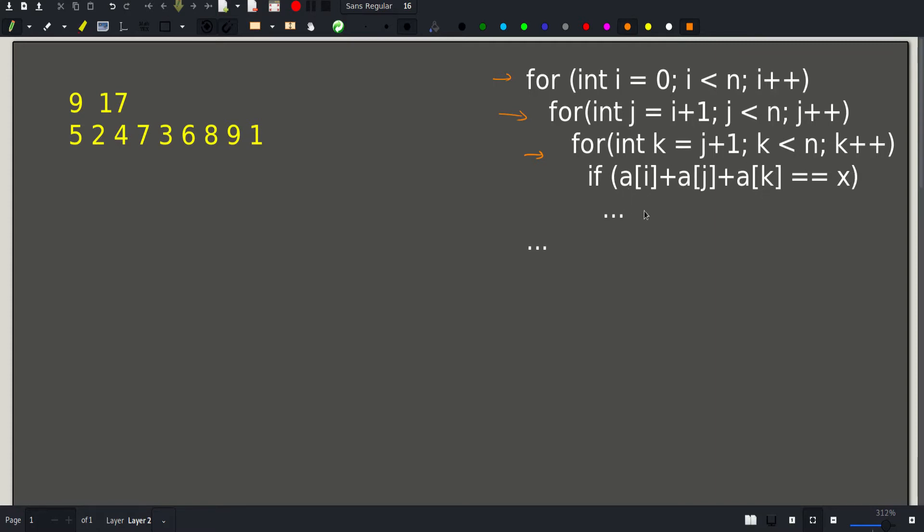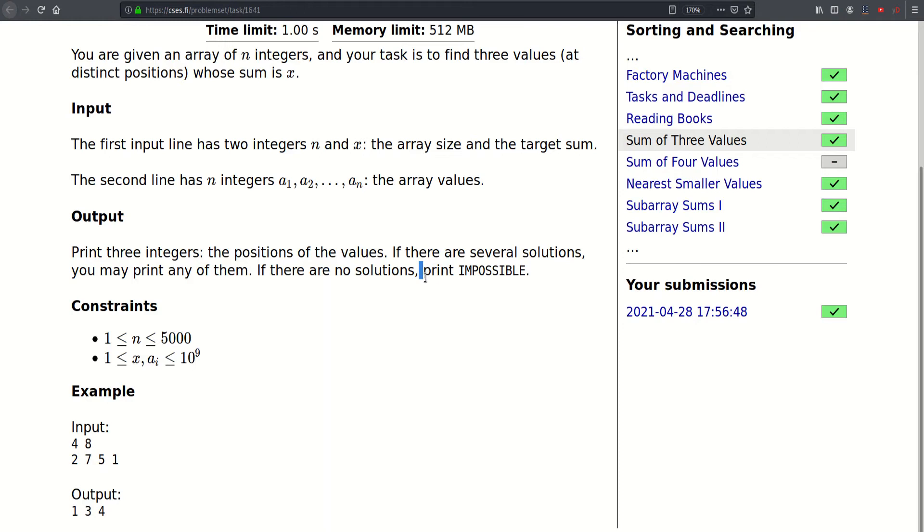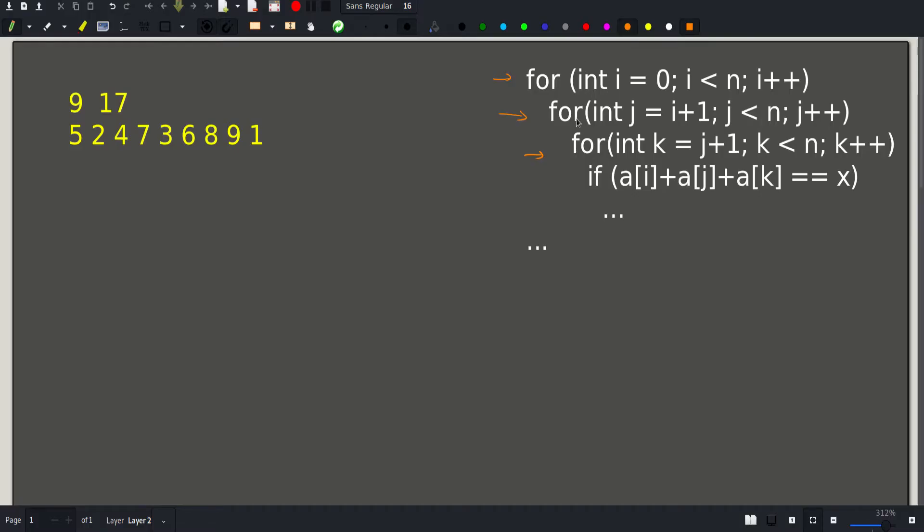If that's the case, we just print i+1, j+1, and k+1 and return. If that does not happen at the end, we'll just print impossible. But as we can see here, the complexity is O(n³) because we have three nested loops.